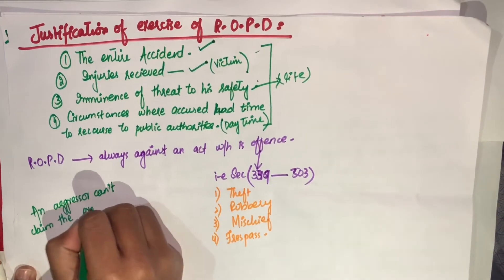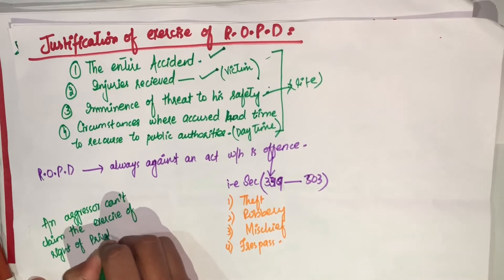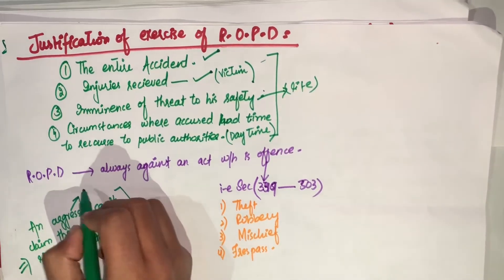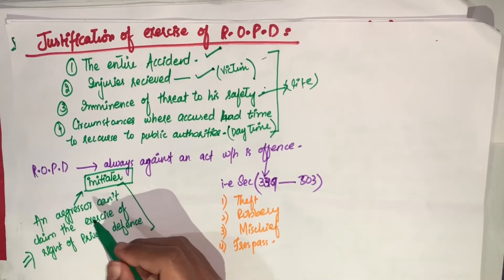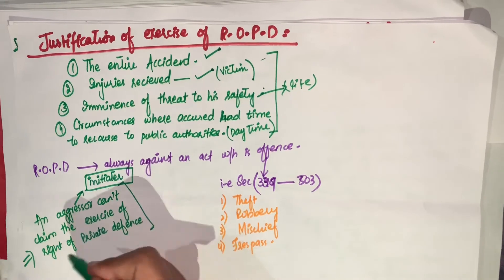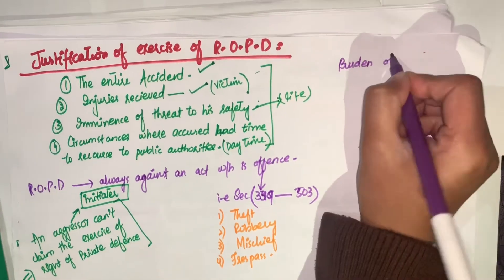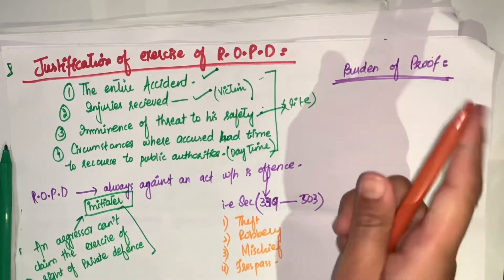And an aggressor cannot claim the right of private defense. He cannot claim the exercise of right of private defense. Now, who is aggressor? Who is the initiator of entire accident? जिसने खुद initiate किया हो, जिसने खुद लड़ाई start की हो, जिसने खुद कोई offense commit करने वाला हो. So, he cannot claim the exercise of right of private defense.